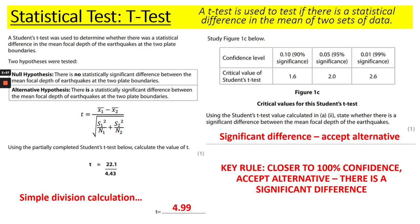You need to remember that the closer to 100% confidence you are, you accept the alternative hypothesis — there is a significant difference. If our T-test answer was not 4.99 but instead 1.2, we would see that it falls at 0.10 confidence, and that would mean we accept the null hypothesis: there's no significant difference. Hopefully that clears that up and makes sense.